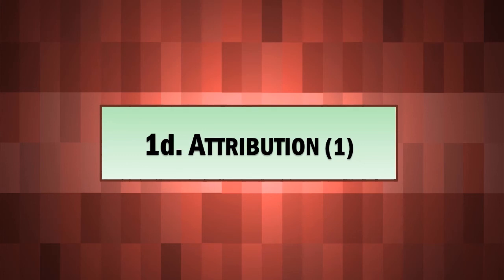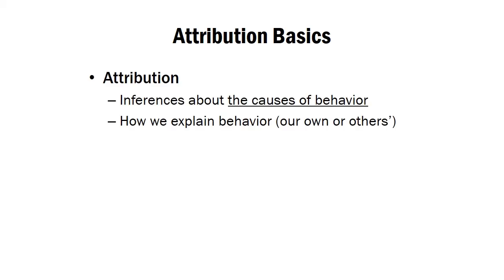In this lesson, we'll start to talk about a concept called attribution, another way in which we think socially. Attributions are inferences we make about the causes of behavior. In other words, it's how we explain behavior — both our own behavior and other people's behavior as well.